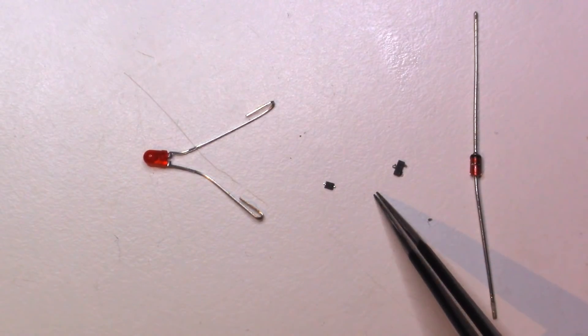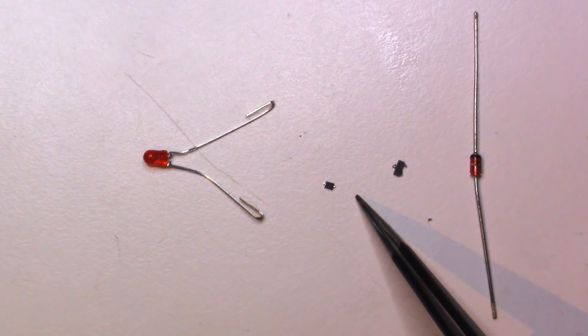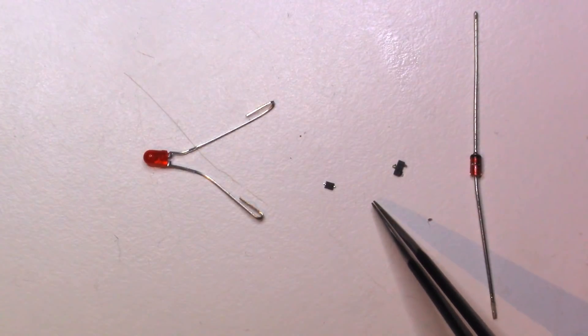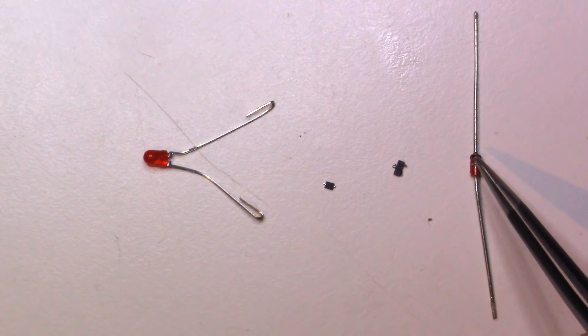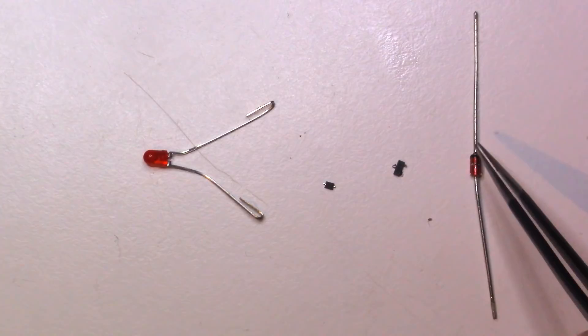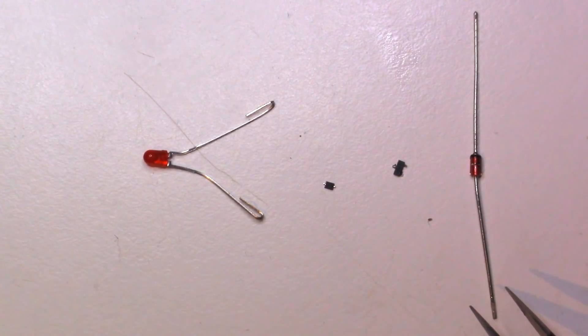Also on this through-hole one, we can see a black circle on one side of the diode, and that represents the same thing. Next, we're going to check some flight controllers and see if we can spot some diodes on the PCBs.